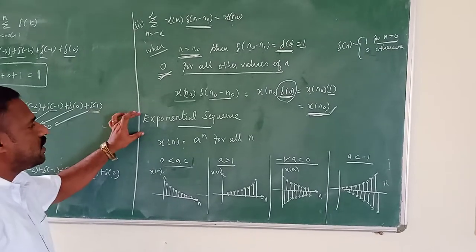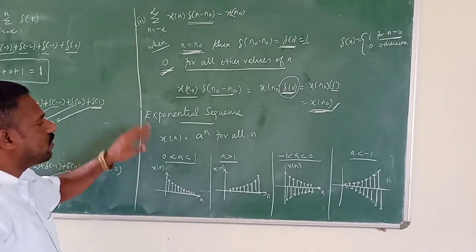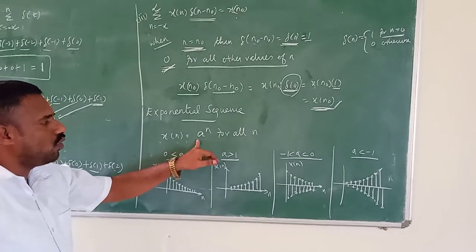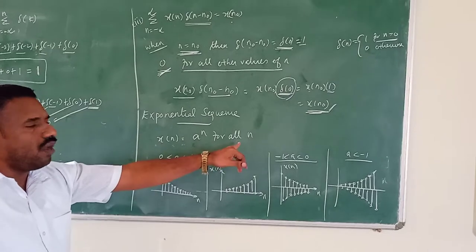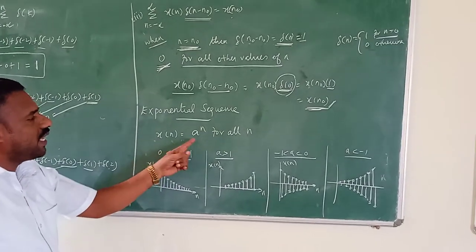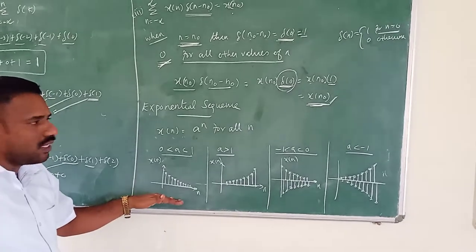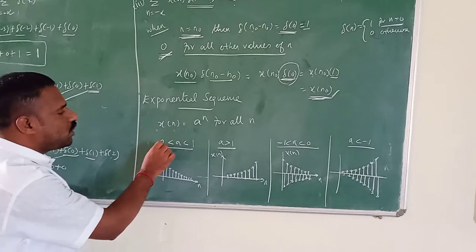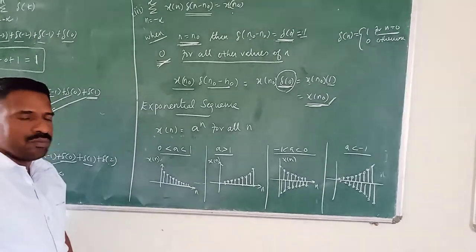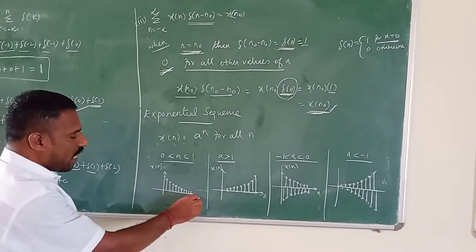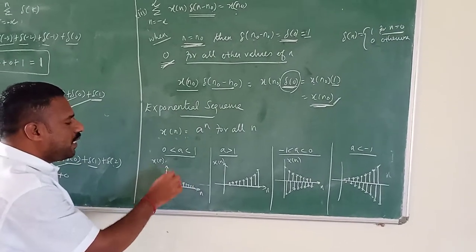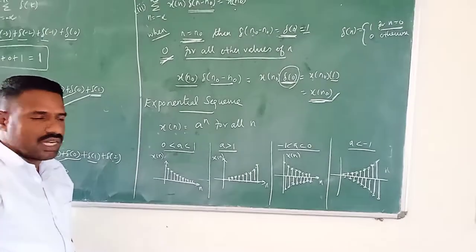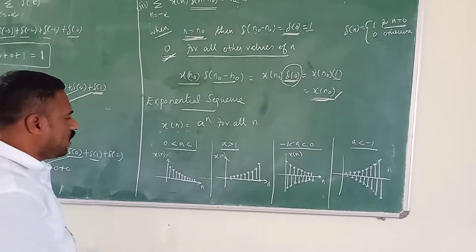Next is the exponential sequence. x of n equals a to the power n for all values of n. Based on the value of a, the graphical representation varies. When you select the a value between 0 and 1, the graphical representation is a decaying exponential curve in the positive axis.